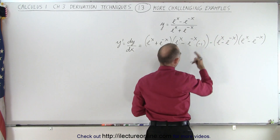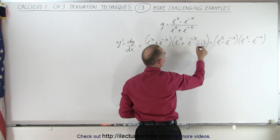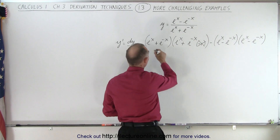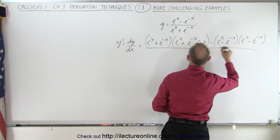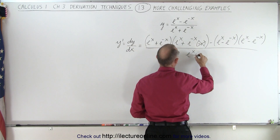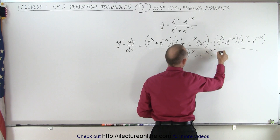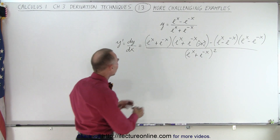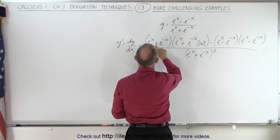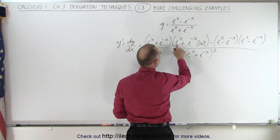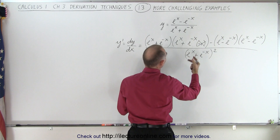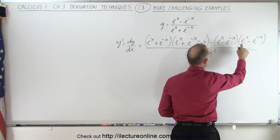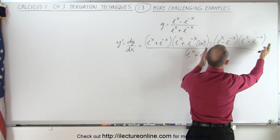Minus the numerator, which is e to the x minus e to the minus x, times the derivative of the denominator. The derivative of e to the x is e to the x, and e to the minus x becomes e to the minus x times minus one, or minus e to the minus x. The minus times the minus becomes plus, so I'll simplify that. Then we divide the whole thing by the denominator squared, which is e to the x plus e to the minus x, all squared.